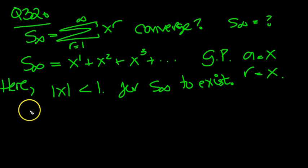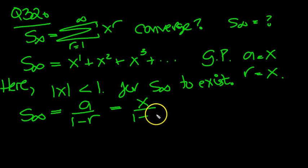And what value does it converge to? We've got S infinity equals A over 1 minus R, which is A as the first term, which is x, over 1 minus R, which is also x. So there we are. X over 1 minus x is the answer for the sum to infinity of the sequence.